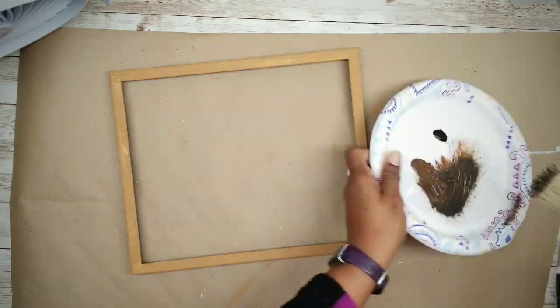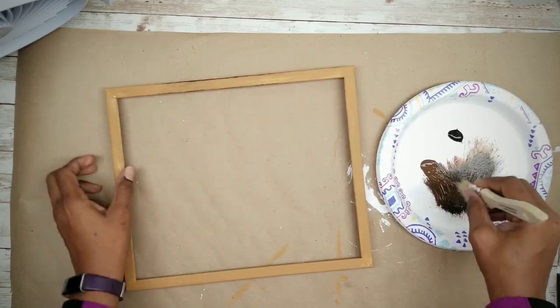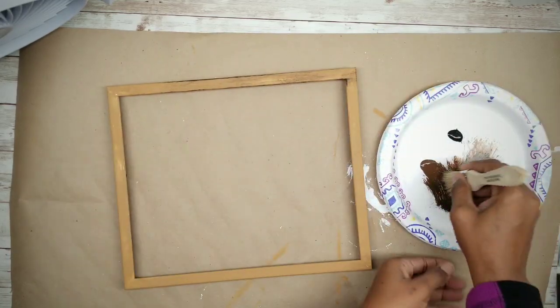And what we want to do is use a dry brushing technique and lightly wisp that brush along the frame. We want to create aging and distressing.